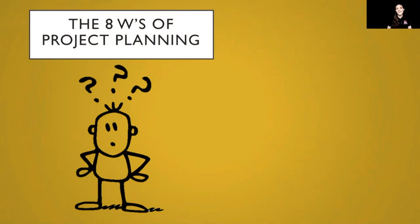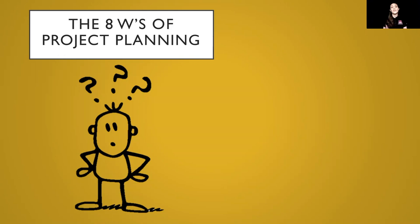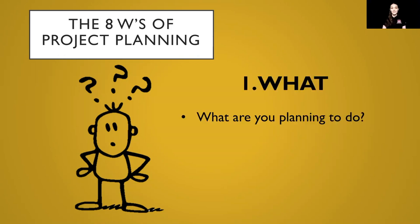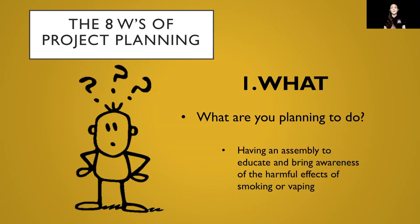Moving on to our next activity, we're going to be focusing on the eight W's of project planning. There is a handout that's blank for you to utilize whenever you are working on a project yourself, but for today I'm going to work through it with you. The first W is 'what' — what are you planning to do? Our example today is going to be an assembly to educate and bring awareness of the harmful effects of smoking or vaping to your school site.